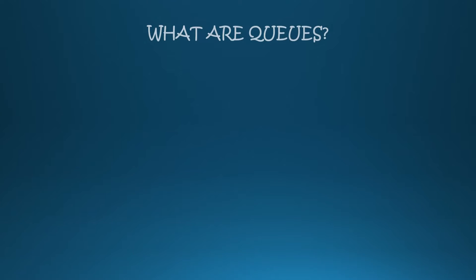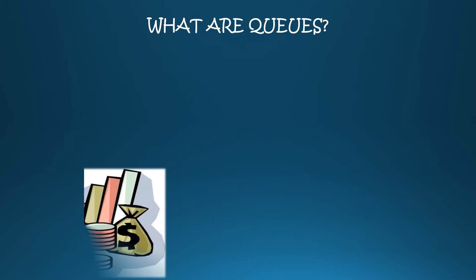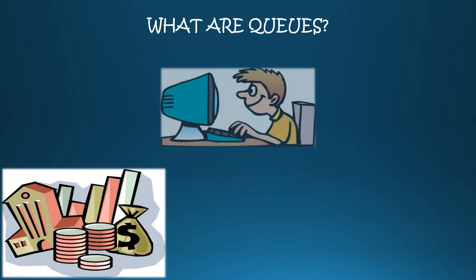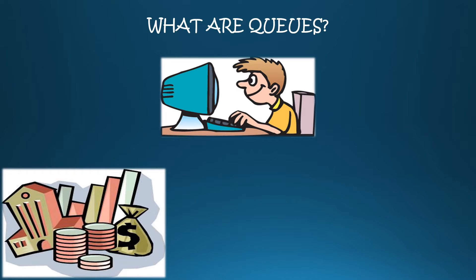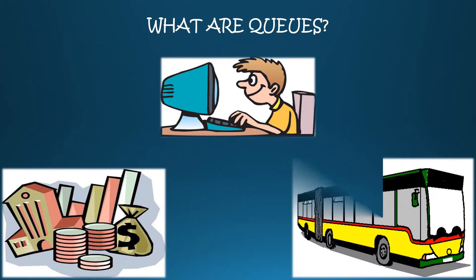What are queues? A queue is the act of waiting in line. It is a first in, first out order and can apply to people, computer data, or other processes, such as vehicles waiting to be serviced or attended to.